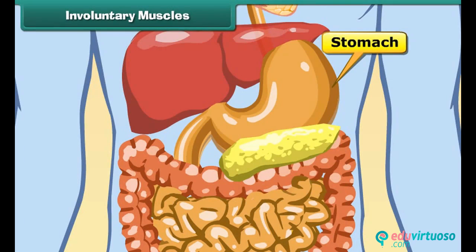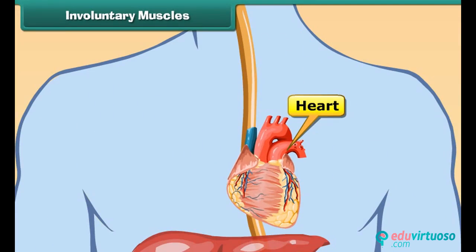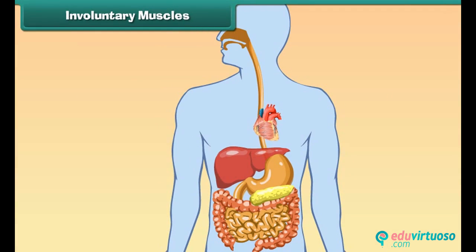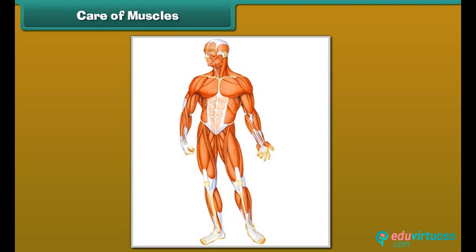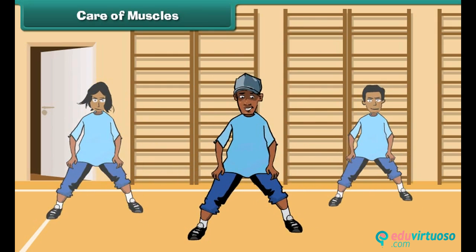The functions of the stomach, intestines, and heart go on in a fixed manner. The functioning of these organs is not dependent on our wishes — such muscles are called involuntary muscles, and their movements are called involuntary movements. For good health, it is important that our muscles are strong and functioning efficiently. Regular exercise makes our muscles strong.